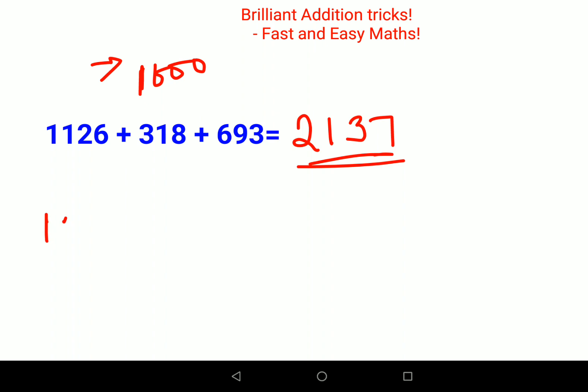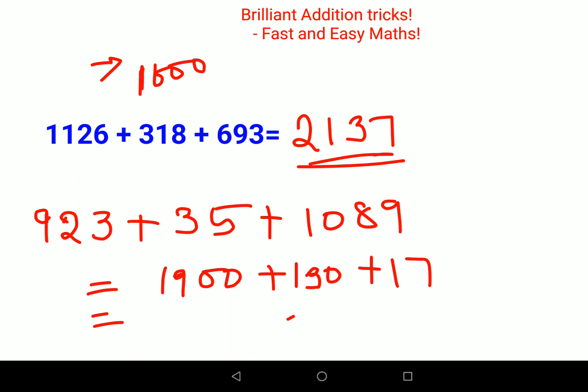Let's do one more: 923 plus 35 plus 1089. Not every time you'll get numbers in ascending order, so just stick to the highest one. First is your thousand, then you have 900, so one thousand nine hundred. Then you have 20 plus 30 which gets you 50, plus 80 gets you 130. So one thousand nine hundred plus 130, plus we have 5 plus 9 which gets you 14, plus 3 gets you 17. So basically you're getting 2047.